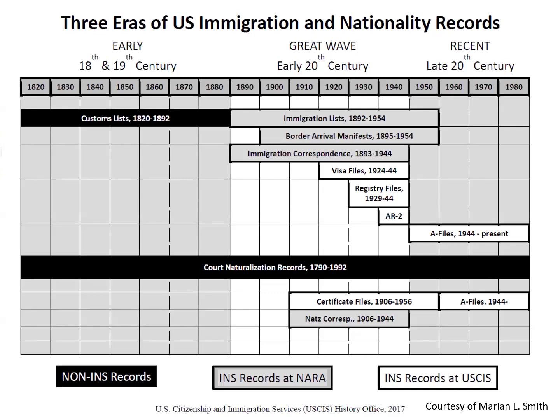When talking about INS records versus USCIS records, USCIS didn't start until the mid-20th century. Those are all the records we talk about: the C files, the A files, the AR-2 files, and registry files — all new files generated for immigrants coming in. Older records only go back to the early 20th century, with immigration lists, border manifests, shipping manifests, and associated correspondence. Prior to that, you have customs lists.